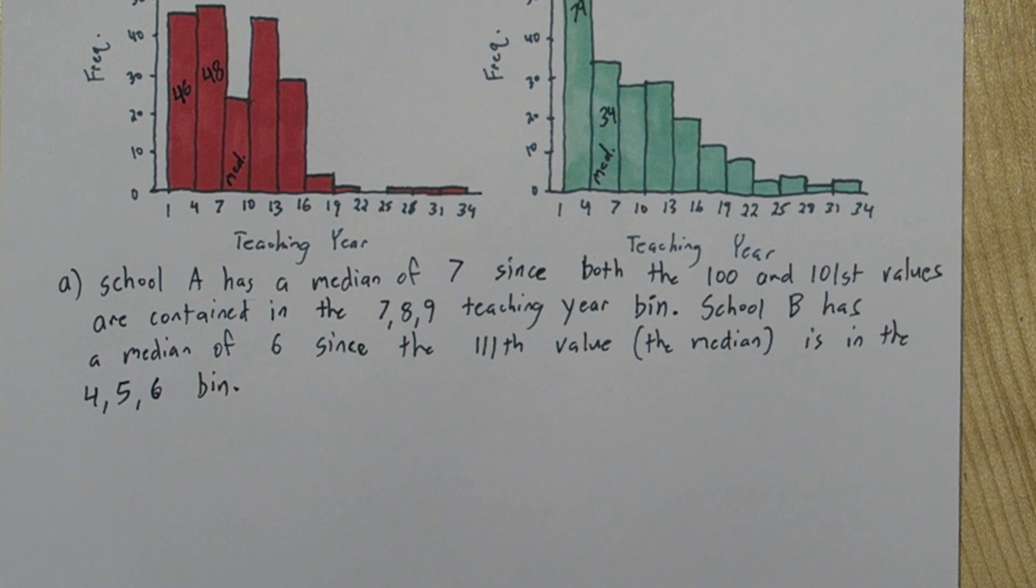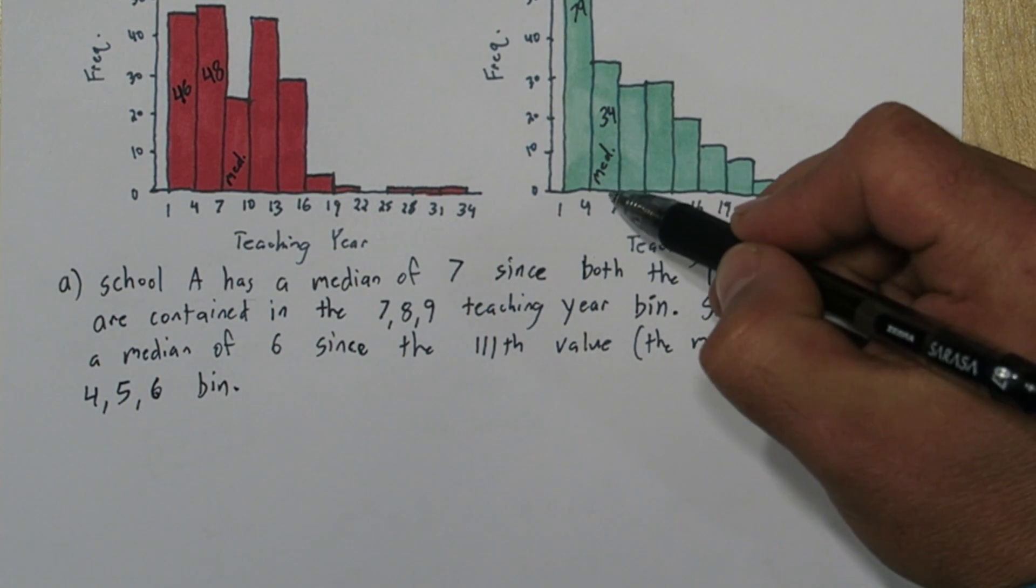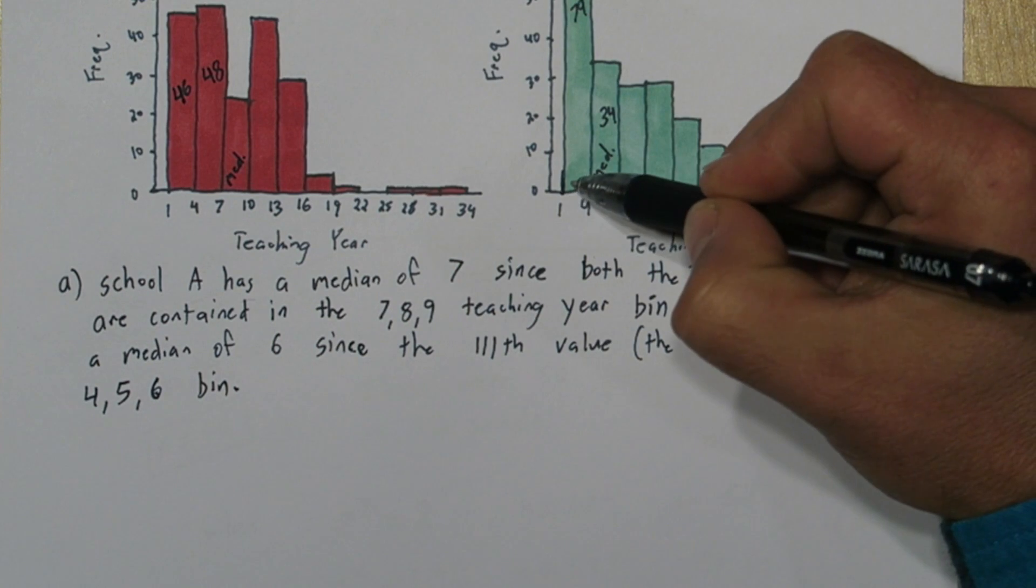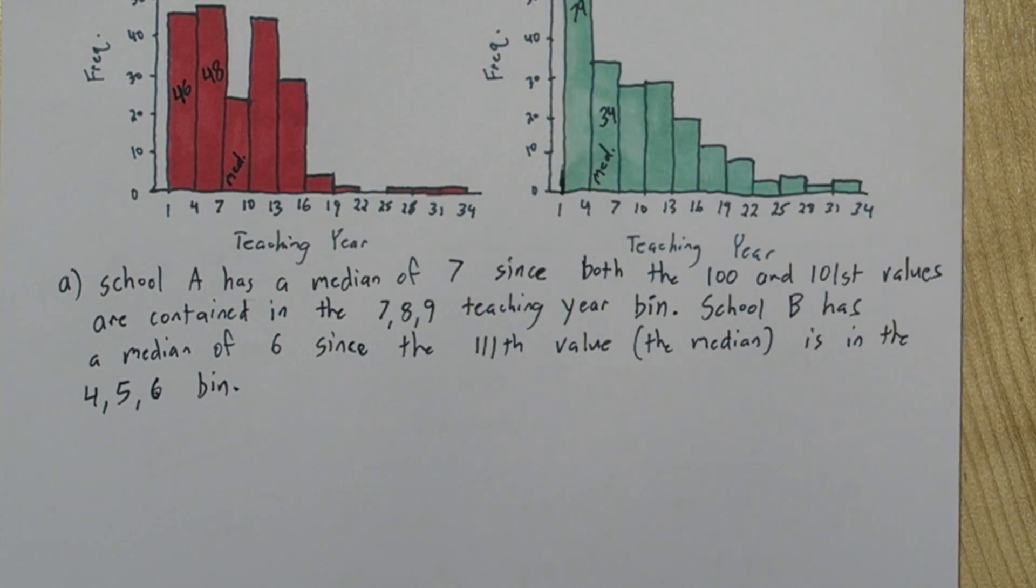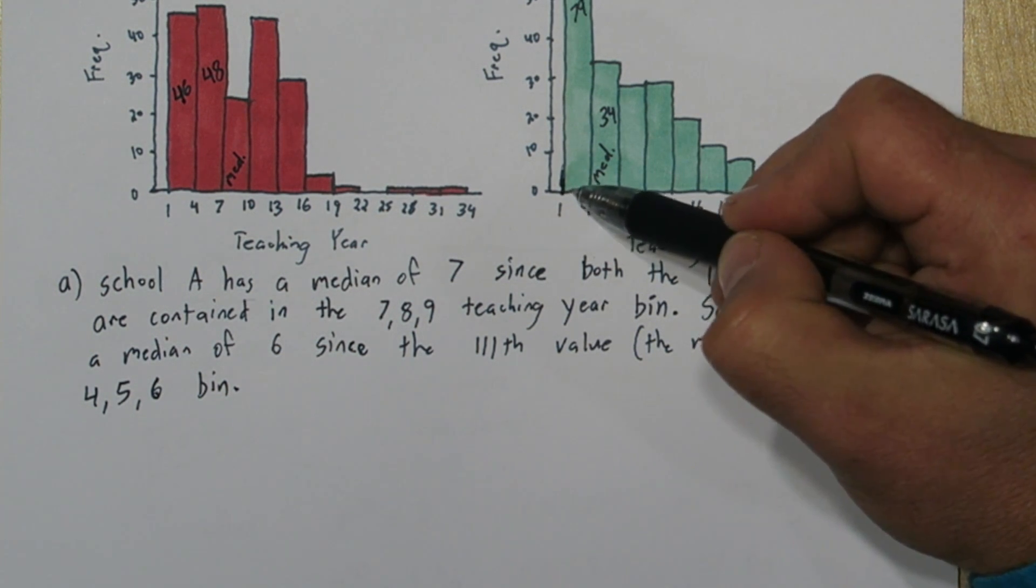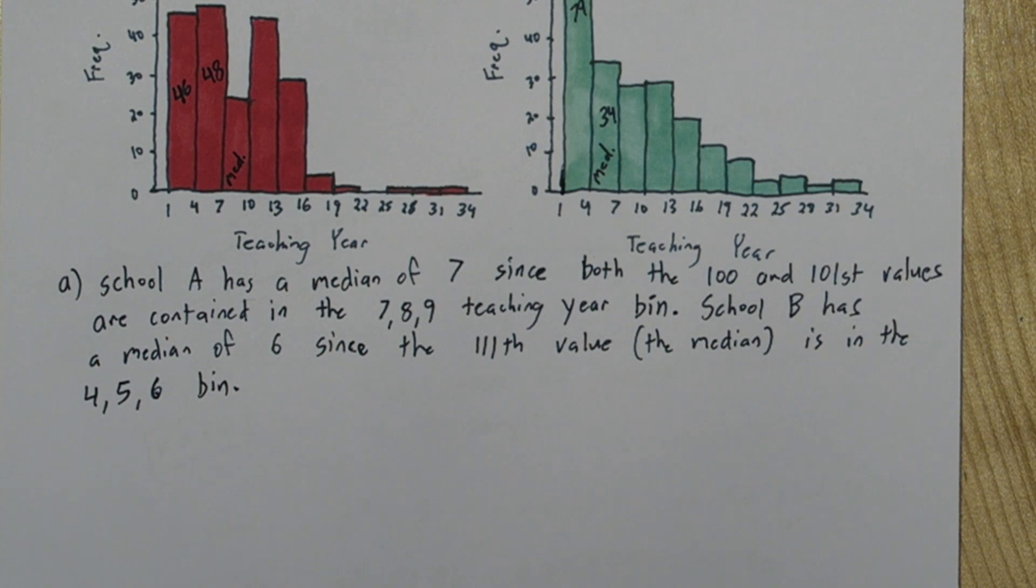One question you might have is, how do we know this is the 4, 5, 6 bin and not the 5, 6, 7 bin? Well, the minimum value for teaching year is 1, and we can see that there's no data to the left of the 1s in both of these histograms. So this must be the 1, 2, 3, and this must be the 4, 5, 6, and etc bins. So we know these axes labels are the lower limits for each bin.